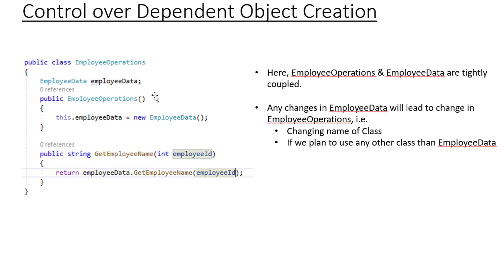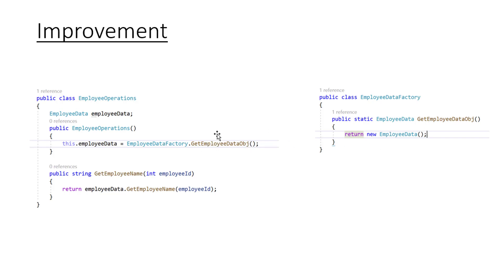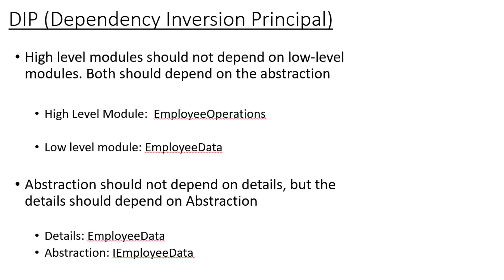One basic improvement we need to make is to remove the object creation from this class. Rather than creating the EmployeeData object inside EmployeeOperation, we create another class — EmployeeDataFactory — and from there we get the object. So EmployeeDataFactory has a method like GetEmployeeDataObject. Now, if there are any future changes to how the object is created, we are not impacted; we just keep calling EmployeeDataFactory.GetEmployeeDataObject and it returns the object.